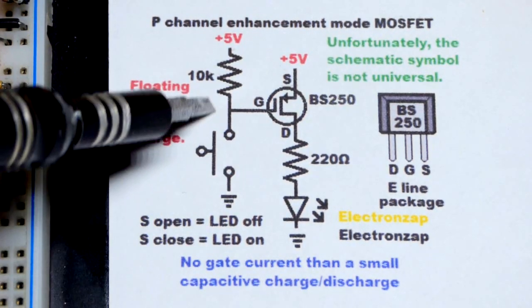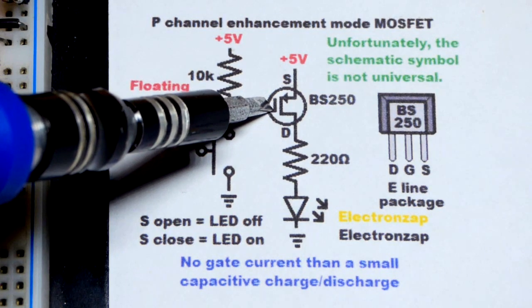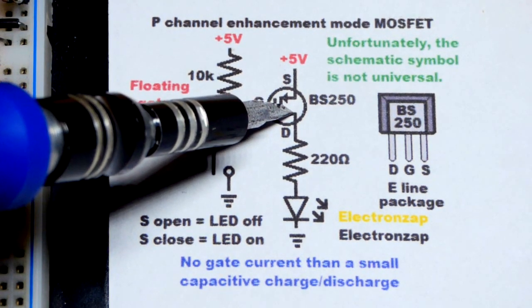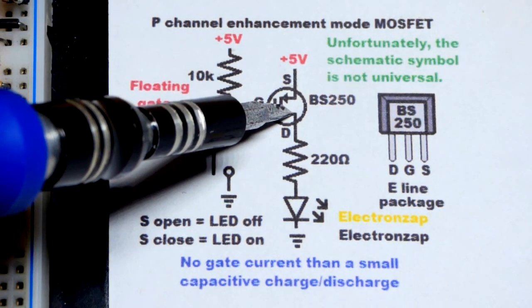If we connect the gate directly to ground right there, we make the gate negative and the P-channel more positive. So think of a capacitor again.